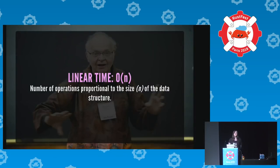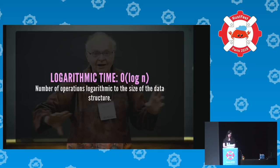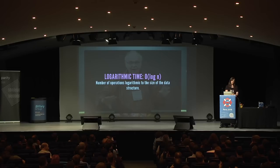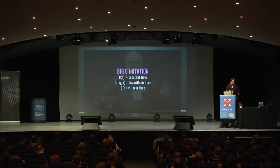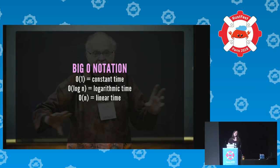With linear time, O(n), you're basically walking through the entire data structure element by element — it's proportional to the size. Then there's logarithmic time, O(log n), where the number of operations is logarithmic to the size — like walking down a single branch of a tree. It's not as good as constant time, but a lot better than linear time. These three are ordered by how fast they are: constant time is best, logarithmic is still pretty good, linear is not great.